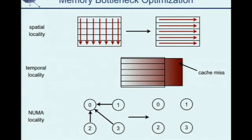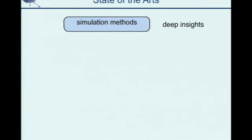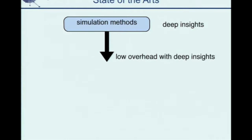Given these optimization strategies, how do we identify the source code optimization opportunities? The first approach is simulation, which uses a simulator to monitor every memory access and get detailed execution insight. It can provide deep understanding of program behavior, but incurs more than a hundred times slowdown. Current research tries to reduce this overhead while maintaining deep insight.